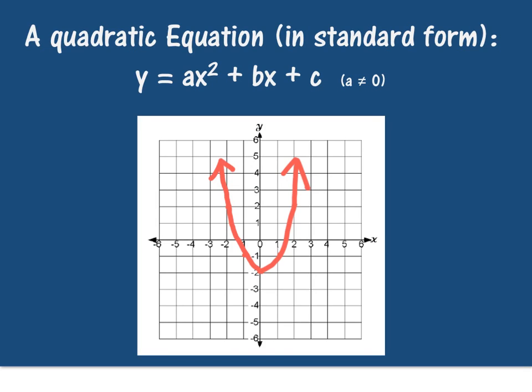As a reminder, a quadratic equation in standard form looks like y equals ax squared plus bx plus c, where a cannot be zero. If a is zero, then a times x squared is zero, and I do not have an x squared anymore. And if I don't have an x squared anymore, I don't have a quadratic equation.